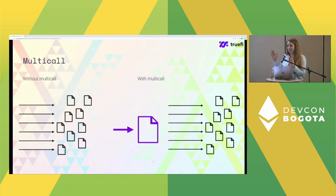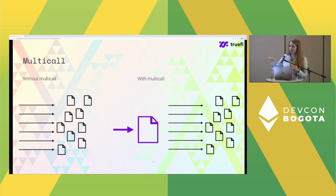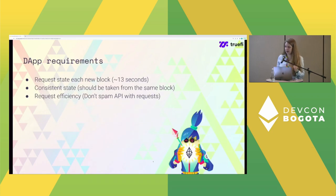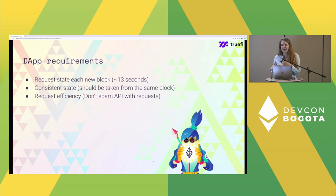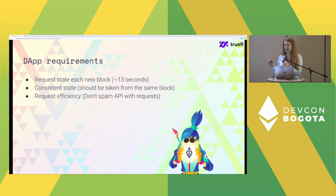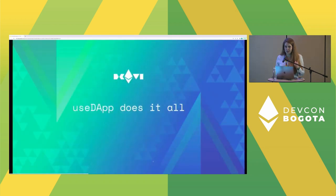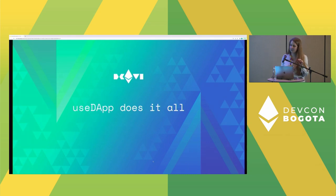Without multi-call we have many different requests to different smart contracts, but with multi-call we have only one call — then multi-call calls all those smart contracts for us. To summarize dApp requirements: we should update state ideally each new block, maintain consistent state from the same block, and optimize to avoid spamming the API. But don't worry — useDApp does it all. You don't have to worry about multi-calls or updating state each new block.